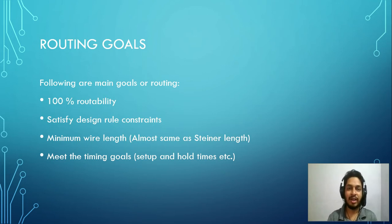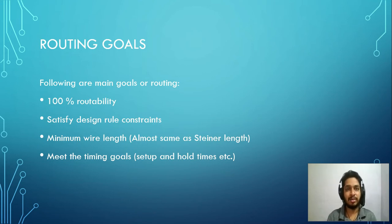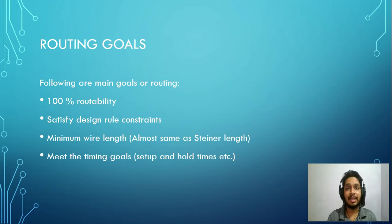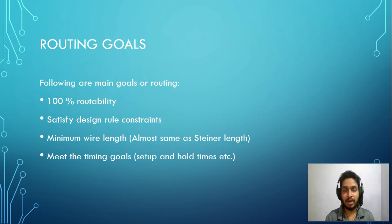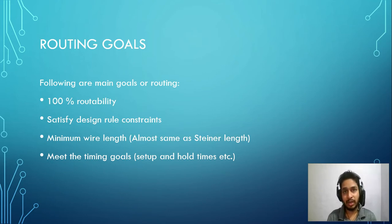In VLSI, the main goal of metal routing is connecting each and every block in a chip. There will also be connections between chips, called inter-integrated circuit connections. The goals of routing are: first, 100% routability, meaning all connections should be completed; second, satisfying design constraints and passing design rule checks (DRCs), without which the chip cannot be manufactured properly.